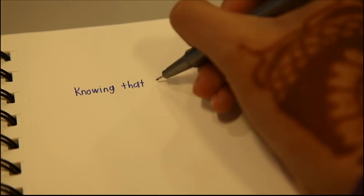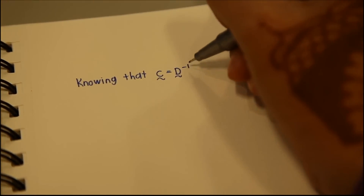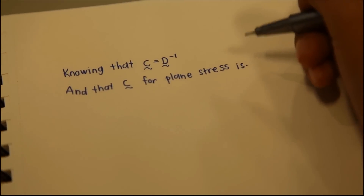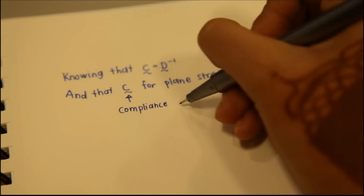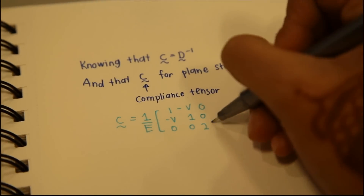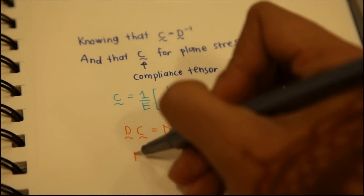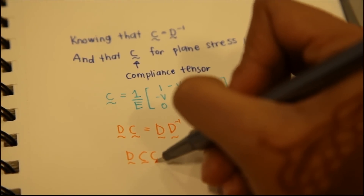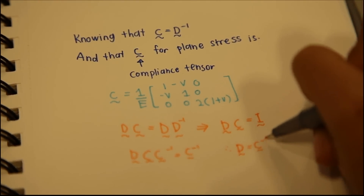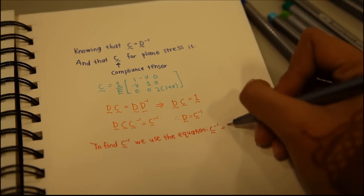Now we explain the mathematical part, knowing that the compliance tensor matrix is equal to the inverse of the elasticity tensor matrix. The compliance tensor matrix for plane stress is given, and mathematically, since C equals the inverse of D, D must equal the inverse of C. We can find D with the following formula and steps.